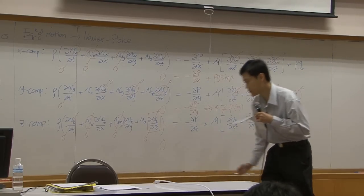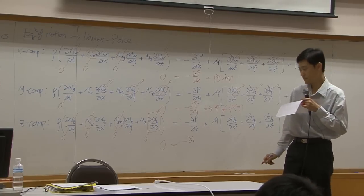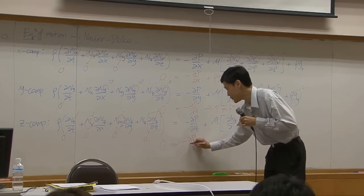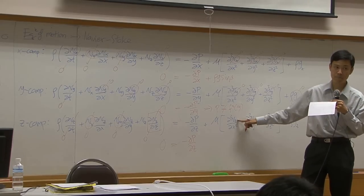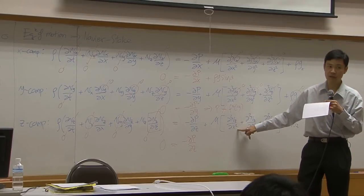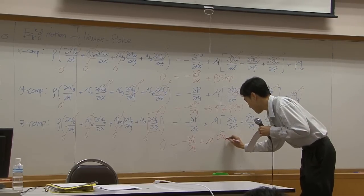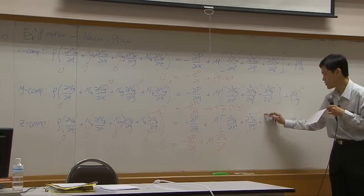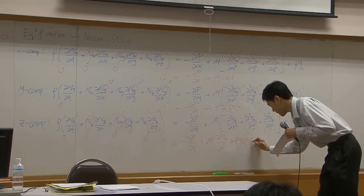The left hand side becomes zero. Does pressure change with respect to z? If you are not sure, keep it. If this term is zero — Vz itself is not zero. Does Vz change with respect to x? Yes, so you need to keep that term. Vz does not change with respect to y, so everything there becomes zero. It does not change with respect to z either, so that is zero. And gz equals cosine.